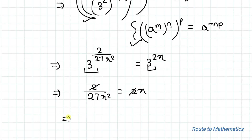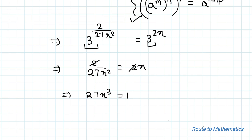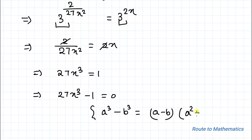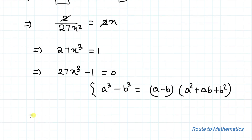So we are getting 27x³ equals 1. Now bringing this 1 to the left-hand side we have 27x³ minus 1 equals 0. Now applying the algebraic identity of a³ minus b³, which equals (a minus b) multiplied with (a² plus ab plus b²).